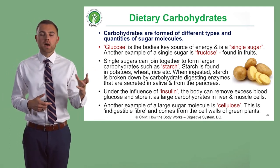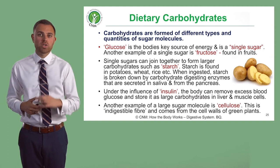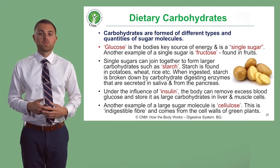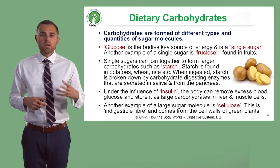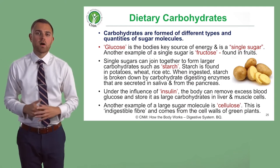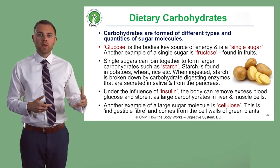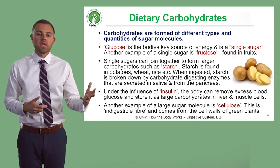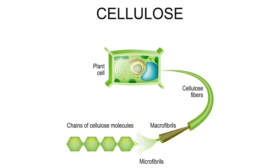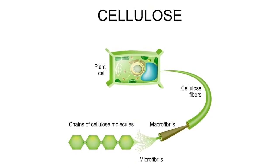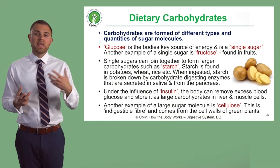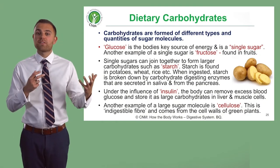There are other types of simple and single sugars as well, such as fructose, which we find in fruits. It's also important to consider the other more complex carbohydrates, one of which is cellulose. Cellulose is a very complex long-chain carbohydrate that we get from plants.